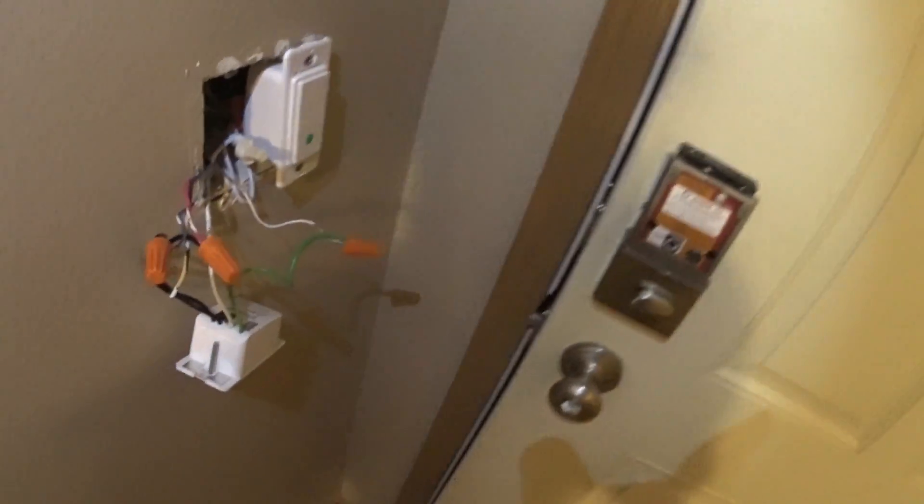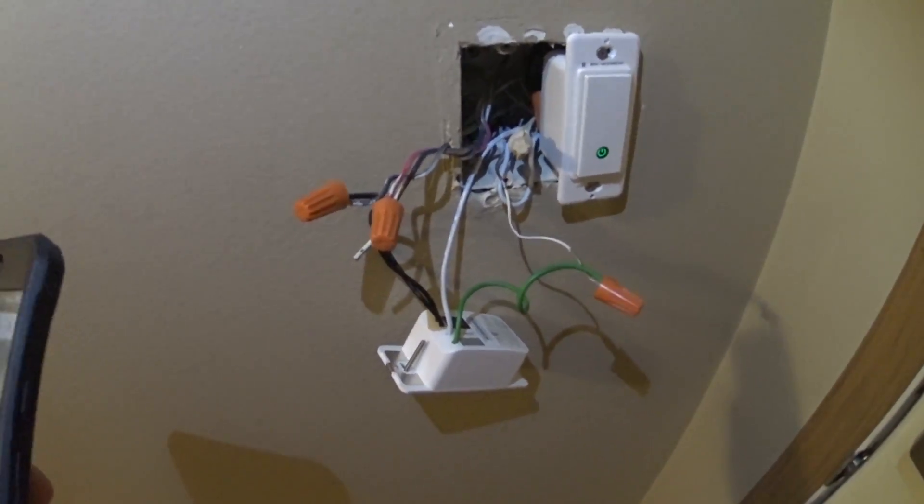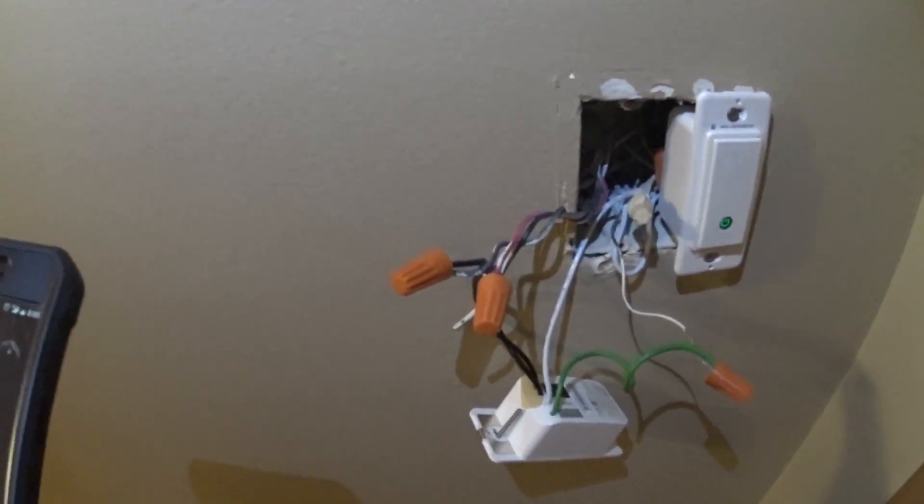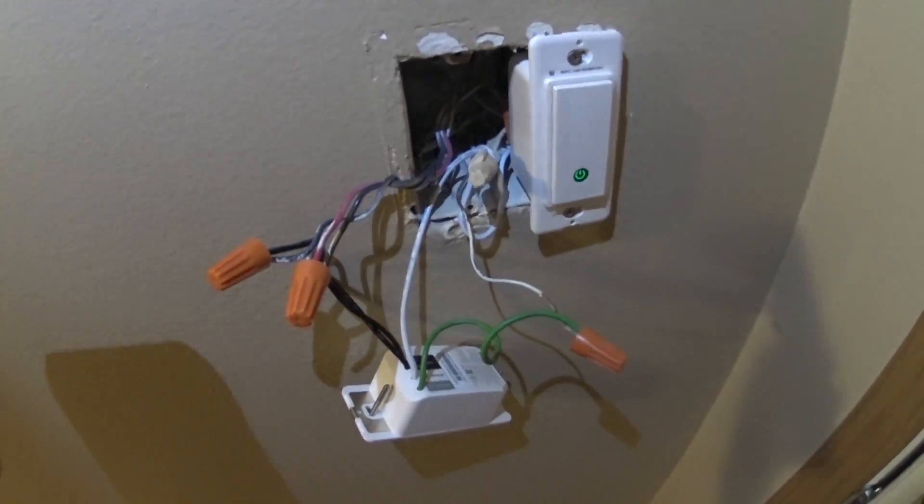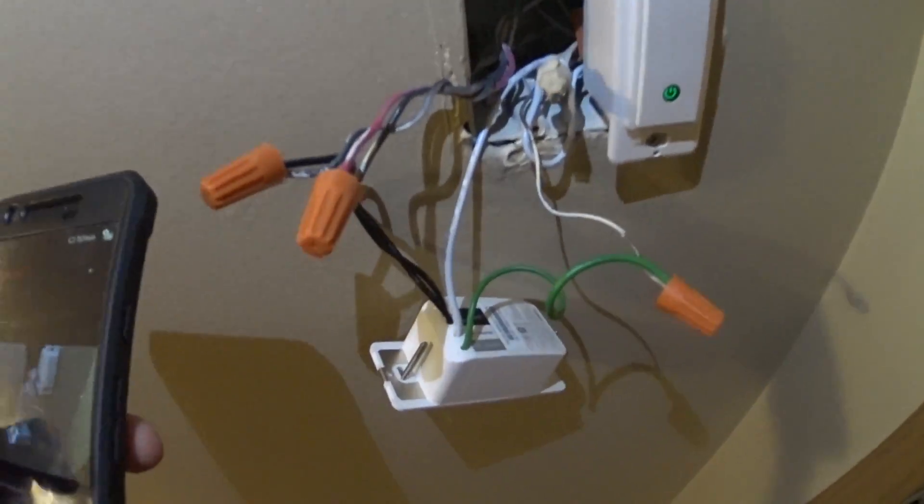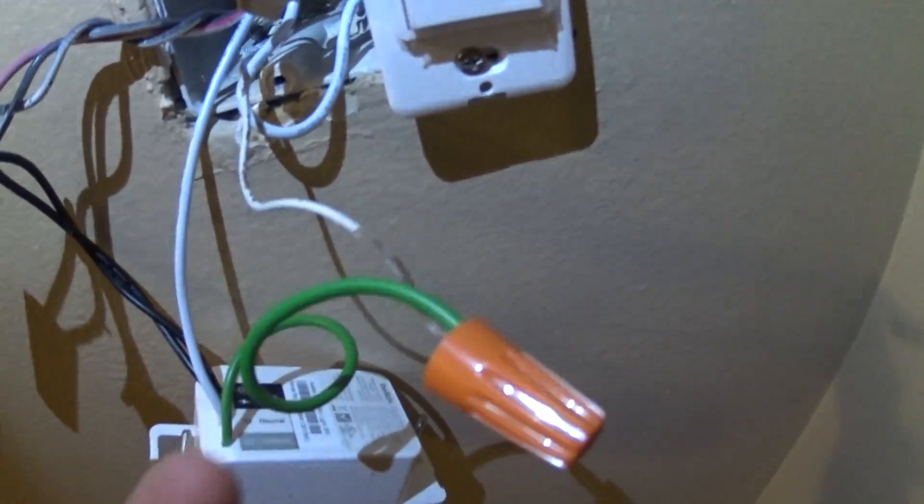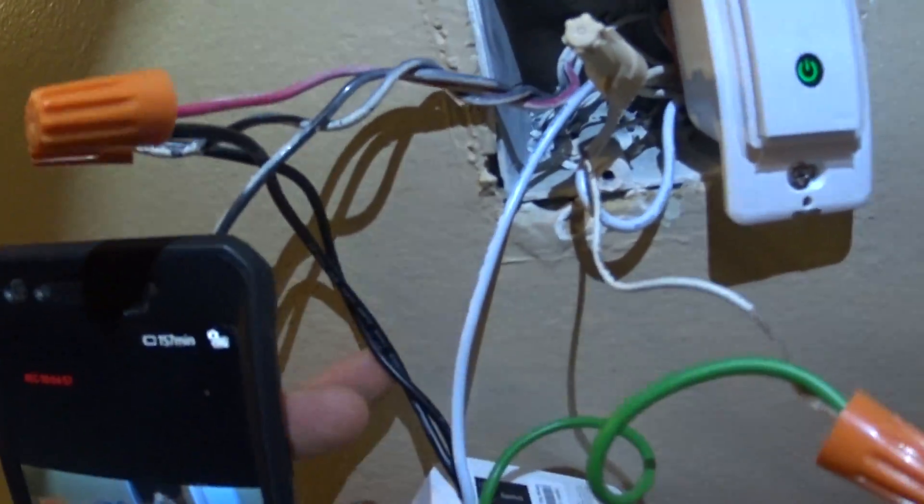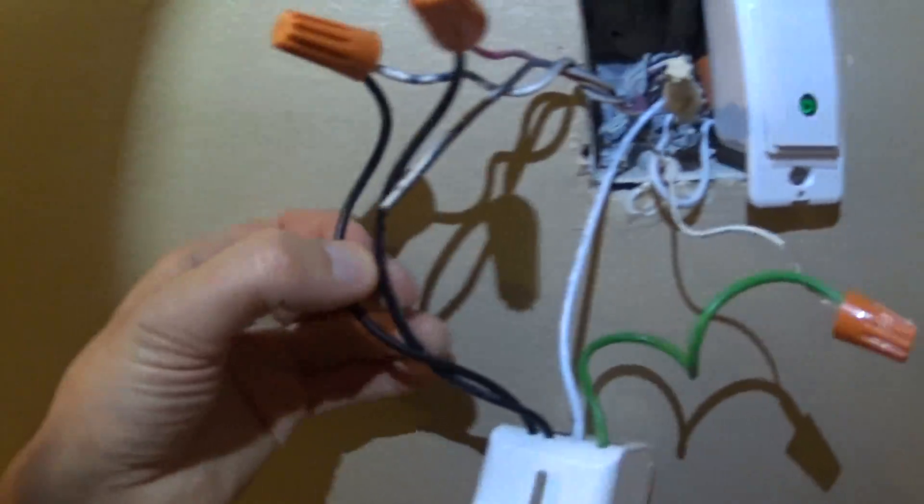So the way that I wired this up, let me make sure I'm getting this in the footage. So I took the green, put it on the ground, and then since down on the other switch is this red wire, I ran that to one leg of this black wire. So you can see here the two blacks.